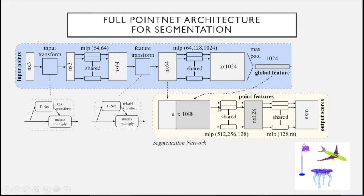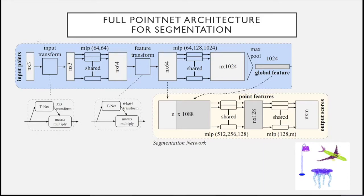For segmentation, you need to predict a score for each point depending on the number of semantic parts or objects you want to predict. You get this global feature and concatenate it with one of the intermediate features of the input point clouds, then apply some multi-layer perceptrons. For each point, you predict a label for the predicted part — a probability vector indicating the probabilities of this point belonging to one of the M parts.